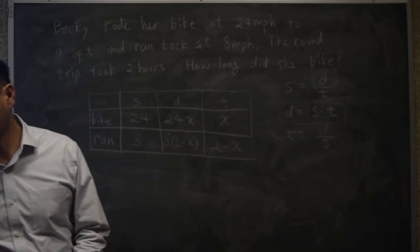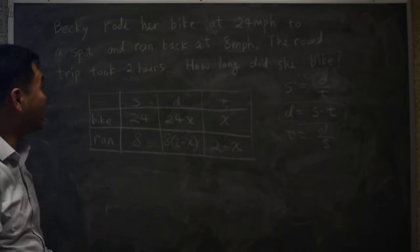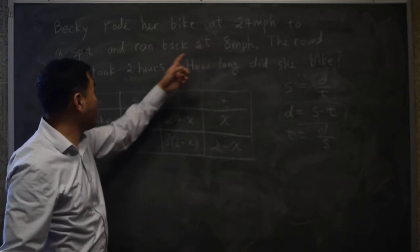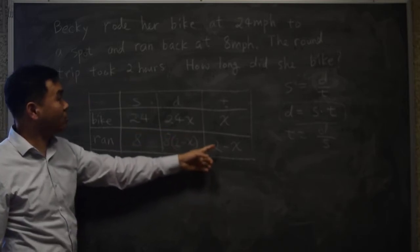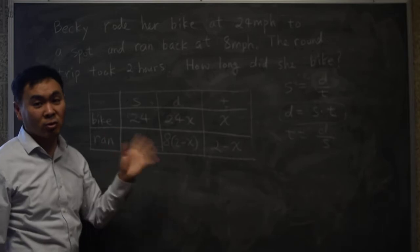After this, you should go back to the question and see if there's any number that you didn't make use of. In this case, 24, 8, 2, all of them appear here. This 2 is this 2, 8, 24, it's all used.